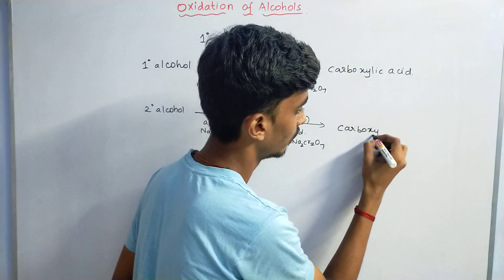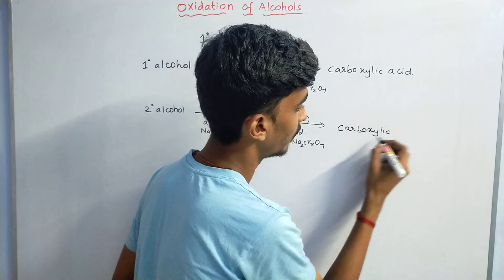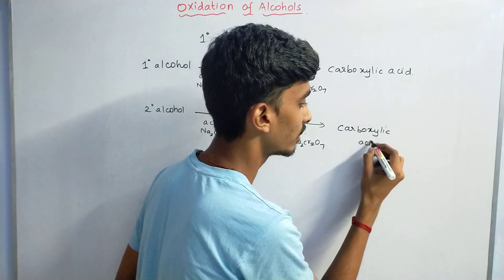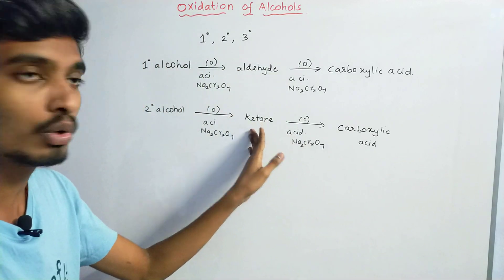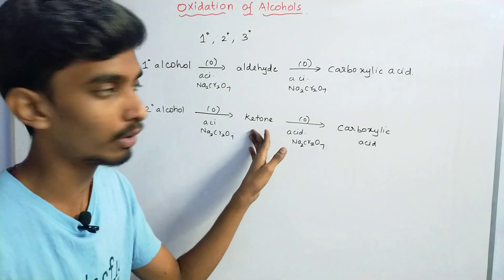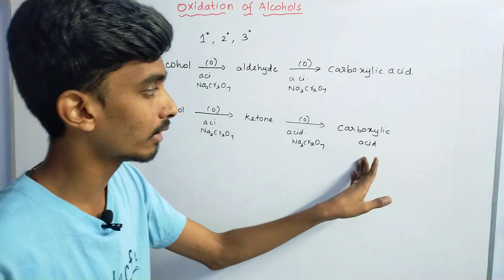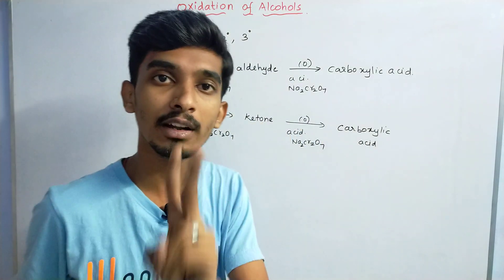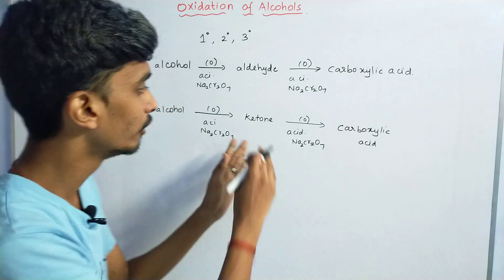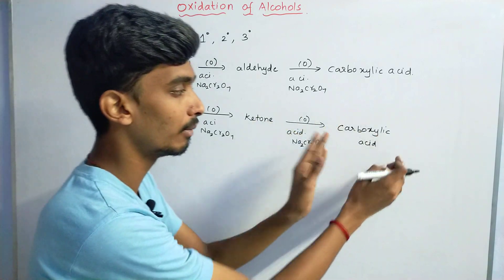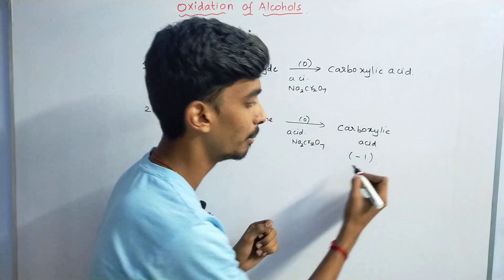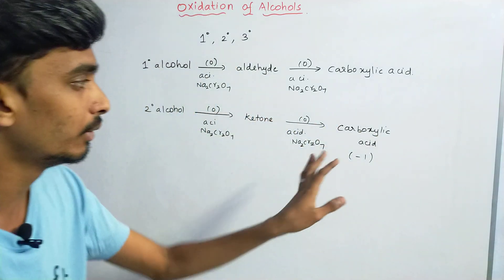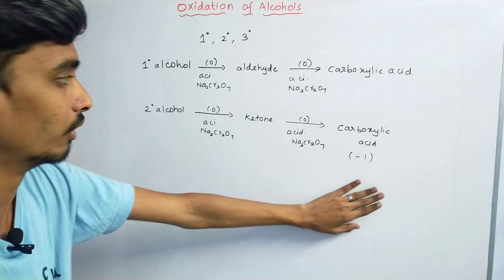The ketone on further oxidation with acidified sodium dichromate is converted into carboxylic acid. When the ketone forms carboxylic acid, there is a loss of carbon — the carboxylic acid formed has one fewer carbon than the original ketone.